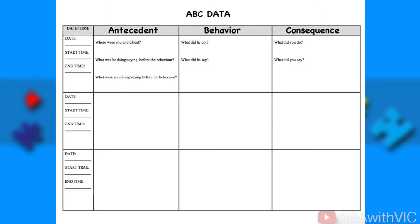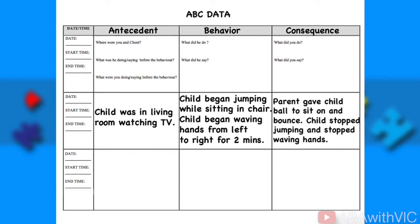By taking ABC data you are able to find out the function of the behavior. In this example, the antecedent is that the child was in the living room watching TV. The behavior was the child jumping while sitting on a chair and waving his hands left to right for two minutes. The consequence was the parent giving the child a ball to sit on, after which the child stopped jumping and waving. This tells us the function of the behavior is sensory or automatic.